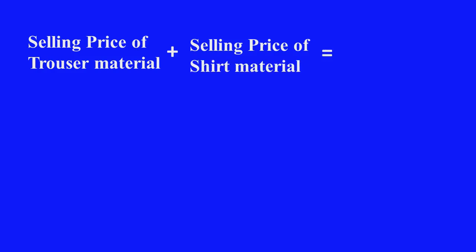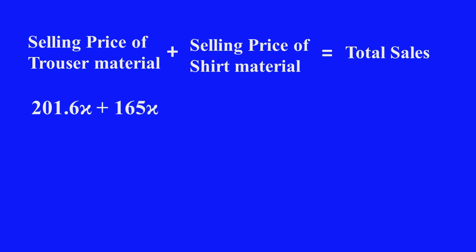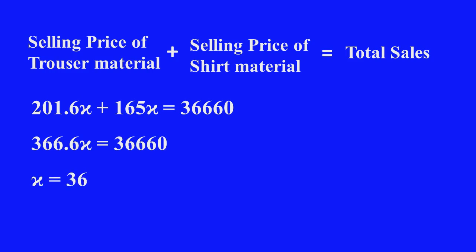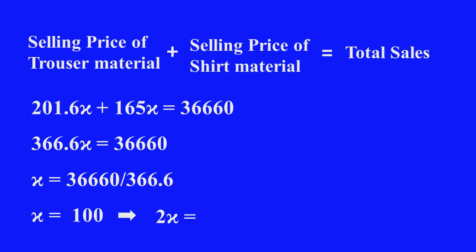Now, selling price of the trouser material plus selling price of the shirt material equals total sales value, which is 201.6X plus 165X, equal to 366.6X. This equals Rs. 36,660. Therefore, X equals 36,660 divided by 366.6.